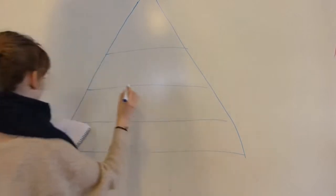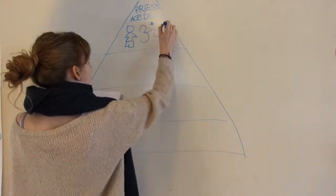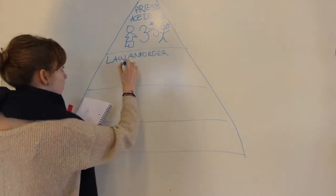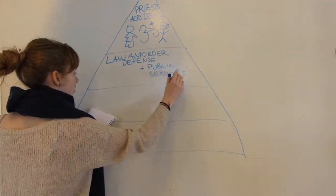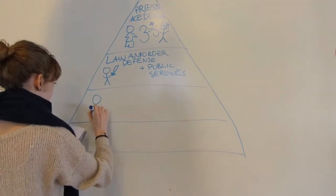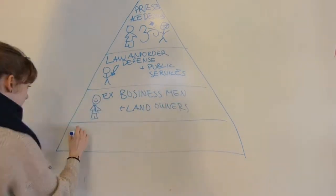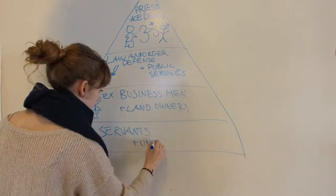For example, in the highest caste there are priests and academics. In the next there are law and order and public service workers. In the next caste there are landowners and businessmen, and in the last one there are servants and unskilled workers.